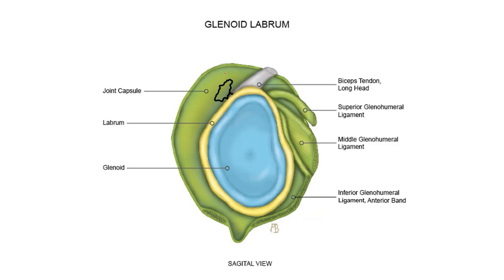Sometimes cysts behave rather weirdly. The ones in the front can dissect right around or under the SGHL; I've seen them dissect into the SGHL, into the capsule, and into the MGHL. And then there's the very strange upside-down lesion — not from a dislocation — which behaves the same as a SLAP lesion but inferiorly, with paralabral cysts.